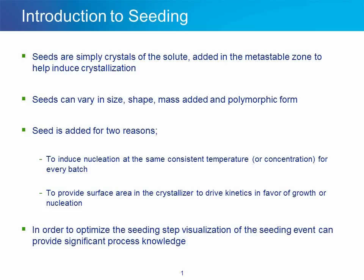Also important is the polymorphic form of the seed chosen for a crystallization process where the polymorphic form needs to be controlled. Really, seeds are added for two reasons. The first might be to ensure that the crystallization starts at the same temperature or concentration for every experiment or every batch, which can really help with consistency and repeatability. The second reason is to provide surface area in the crystallizer to drive kinetics in favor of either growth or nucleation.